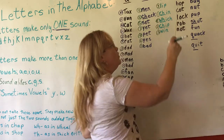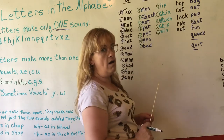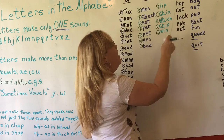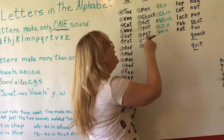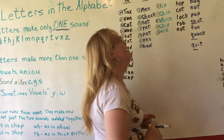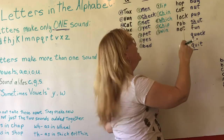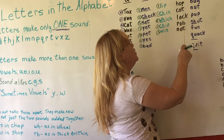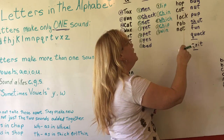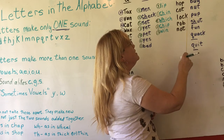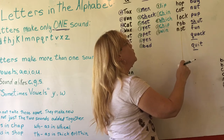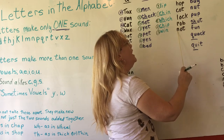Now we move to O — 'oh.' So we have: H-O-P — hop. C-O-T — cot. L-O-C-K — lock. R-O-B — rob. N-O-T — not.